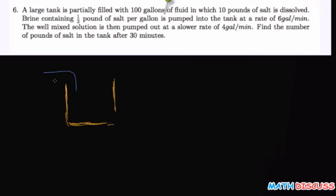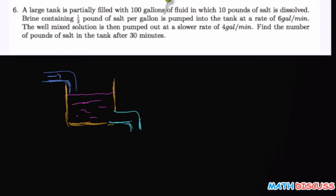So one pipe pumps in and another pumps out. Now, this tank contains 100 gallons of fluid, and in this 100 gallons we have 10 pounds of salt. So the tank contains 100 gallons with 10 pounds of salt dissolved in it.